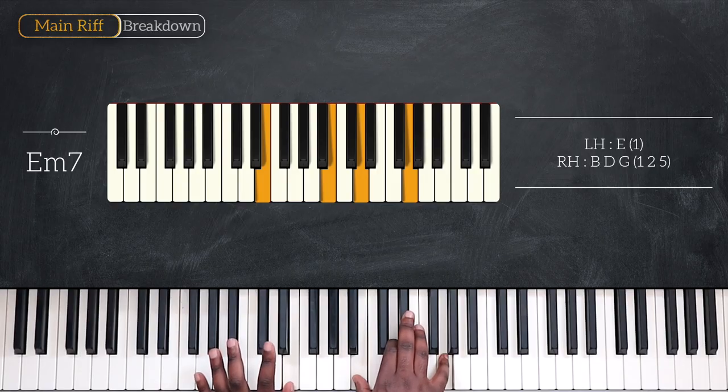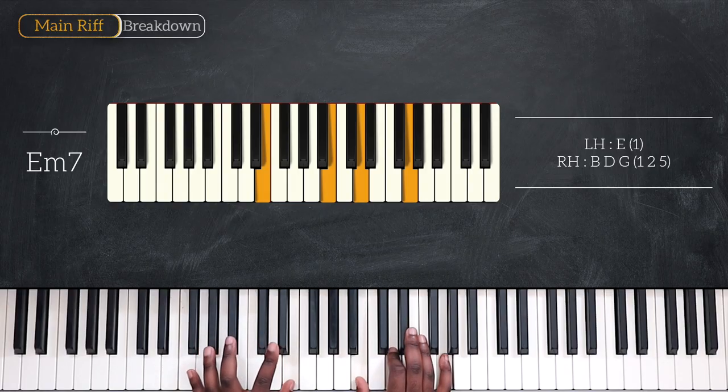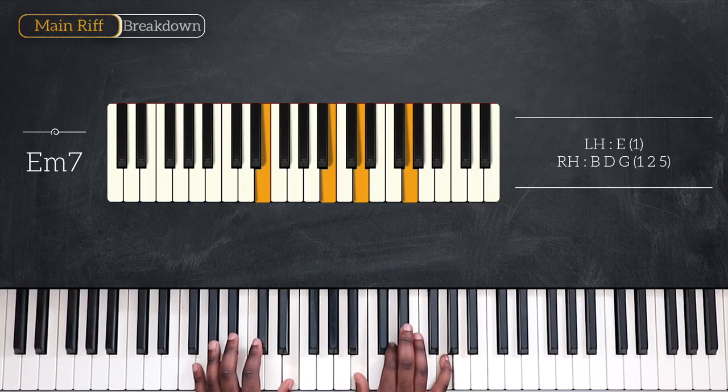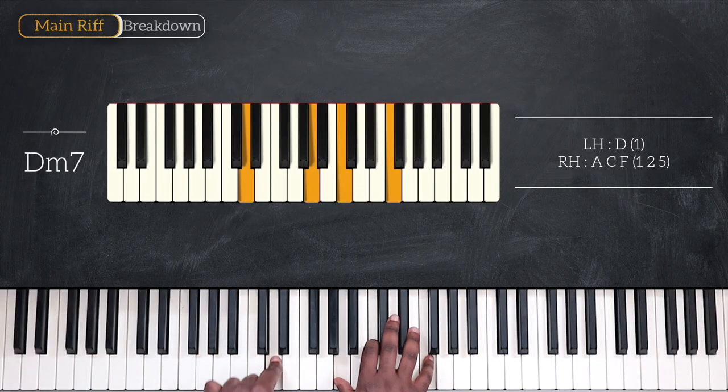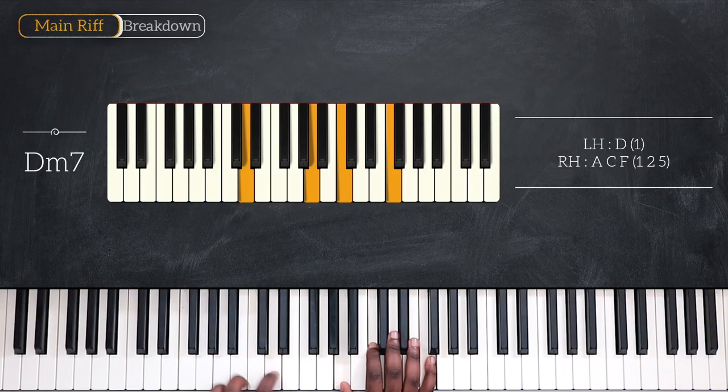Coming up next we have E minor 7, now using this voicing. E on your left, up here, B, D and G. Going down a whole step on D minor 7. D, A, C and F.